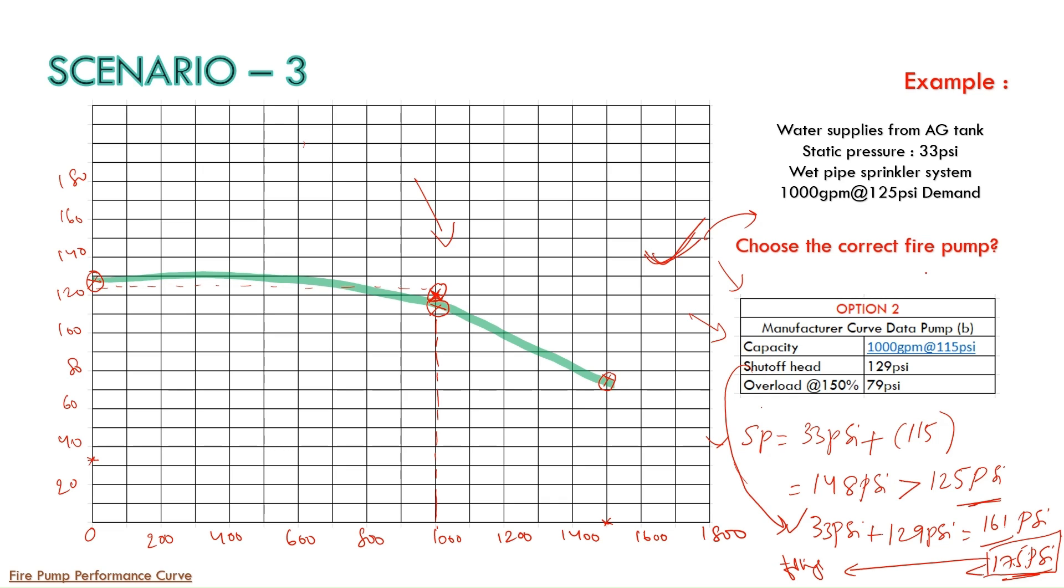But one more thing I want to highlight to you. Previously I told that based on this curve, straight away it can be rejected. In case if the static pressure is zero, see if the static pressure is zero, then zero plus 115 psi will be 115 psi only. So at 1000 gpm is 125 psi required. That is why we can reject this pump. But in our case, we have static pressure 33 psi, so we can select this Option 2.